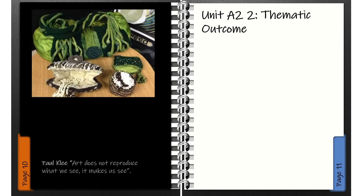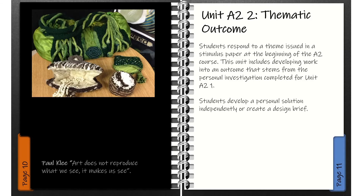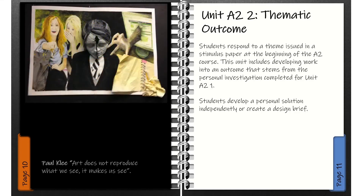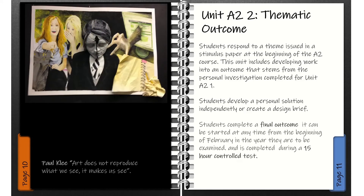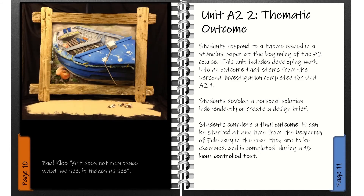The final unit for A2 Art and Design is a Thematic Outcome. Students respond to a theme issued in a stimulus paper at the beginning of the A2 course. This unit includes developing work into an outcome that stems from the personal investigation completed for Unit 1. Students develop a personal solution independently or create a design brief, and complete a final outcome. It can be started at any time from the beginning of February in the year they are to be examined, and is completed during a 15-hour controlled test.